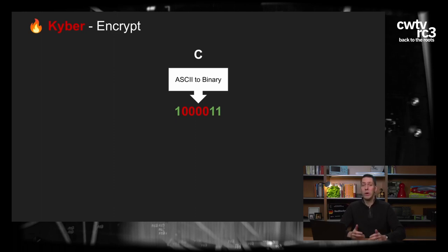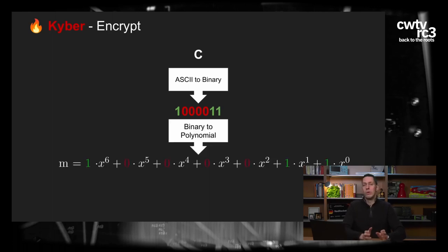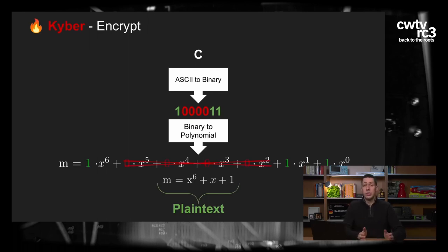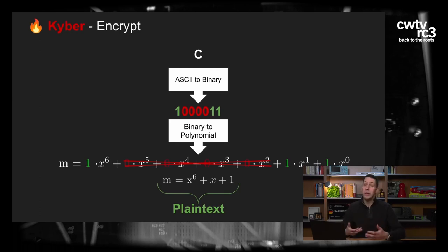Kyber benutzt Polynome, also müssen wir diese Werte in Polynome umwandeln. Das ist ziemlich einfach: wir nehmen die Einsen und Nullen und benutzen sie als Koeffizienten für ein Polynom. Ein Bit ist ein Koeffizient dieses Polynoms. Da Null mal irgendwas Null ist, können wir die ganzen Terme mit Null weglassen und alles ein bisschen kürzen. Das ergibt einen kleinen Klartext-Ausdruck, den wir verschlüsseln können – zum Beispiel x hoch 6 plus x plus 1.